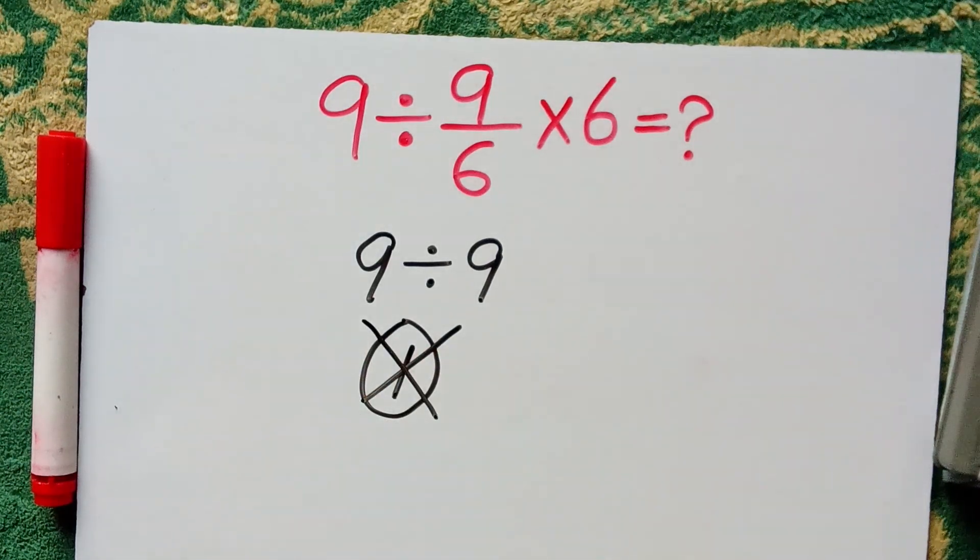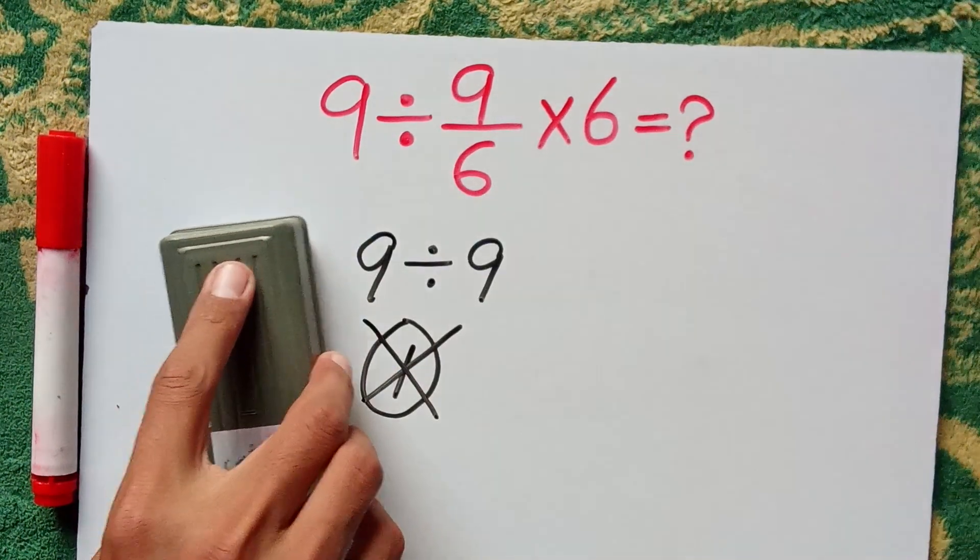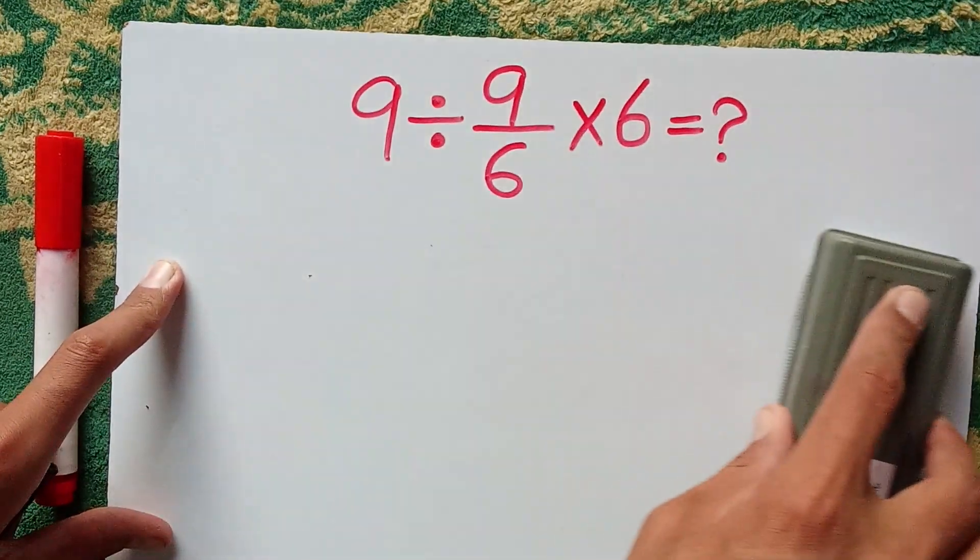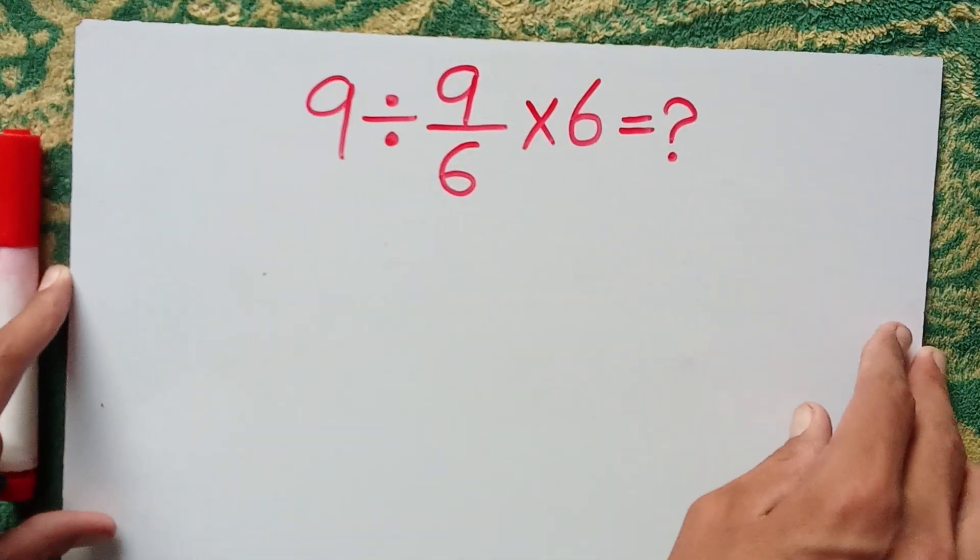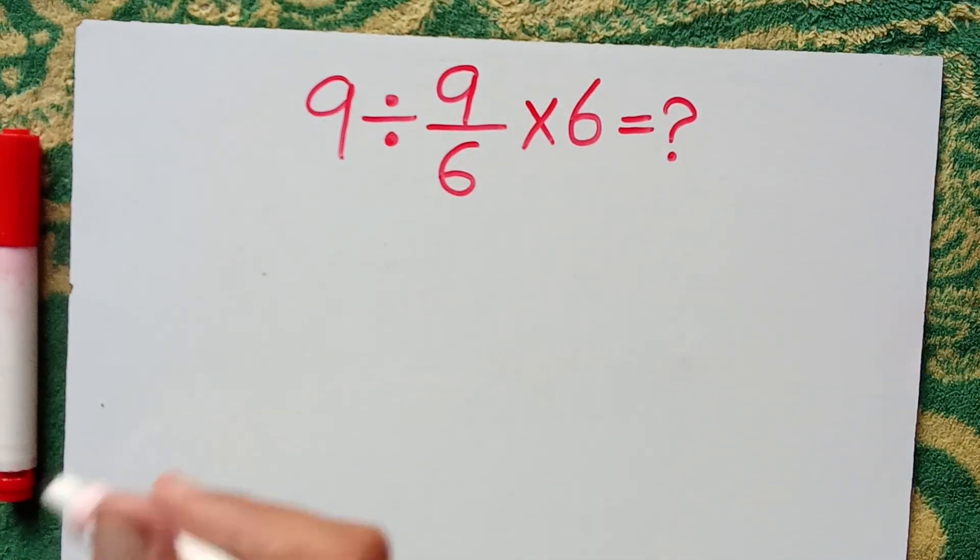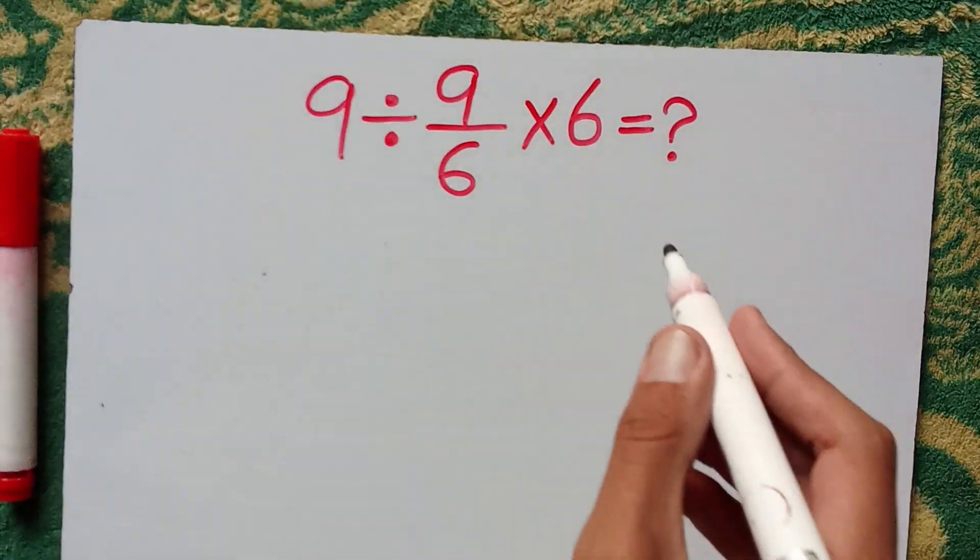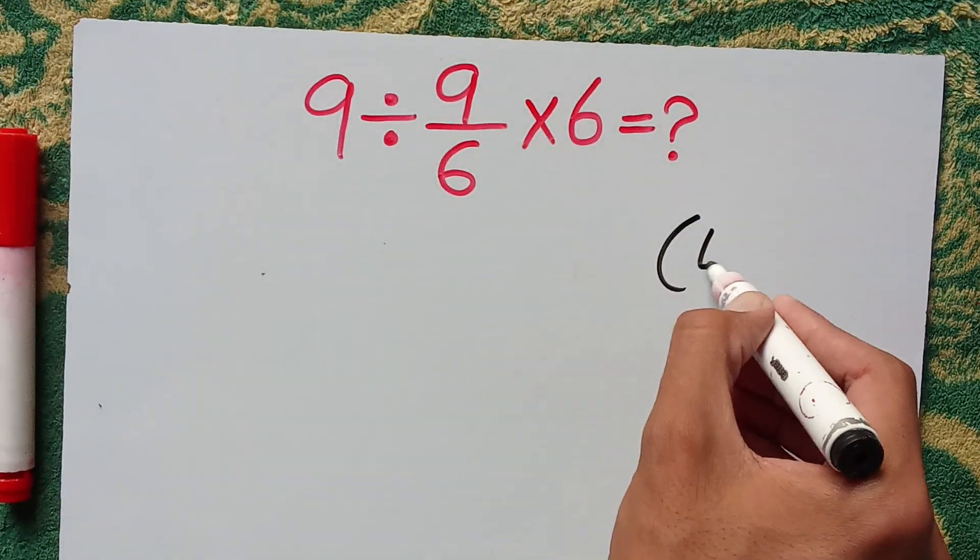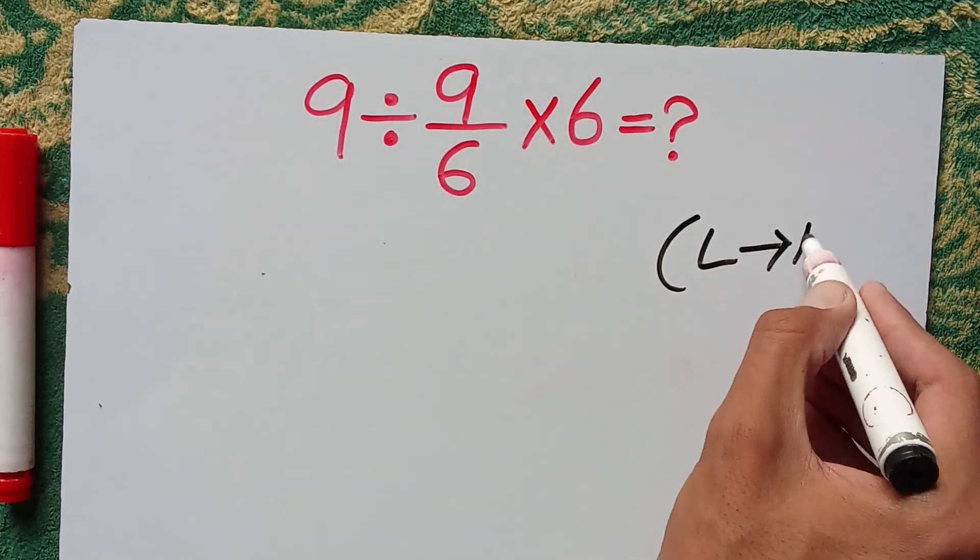I am going to solve this question by the correct method. According to the rule of PEMDAS, multiplication and division have equal priority and we can solve it from left to right.